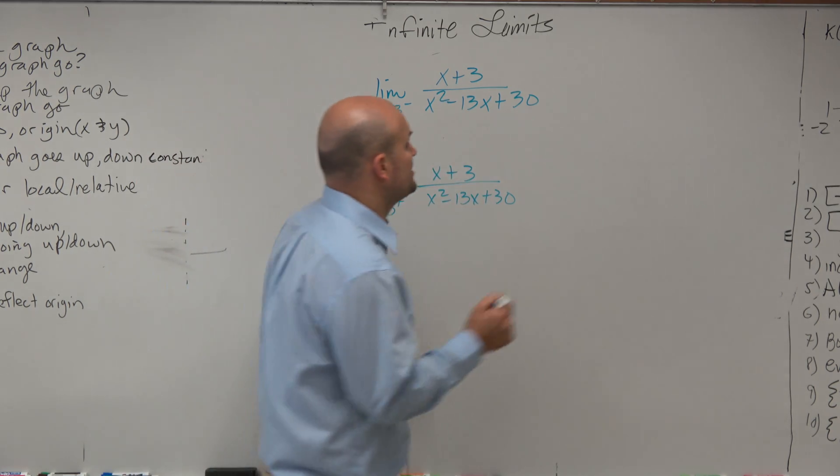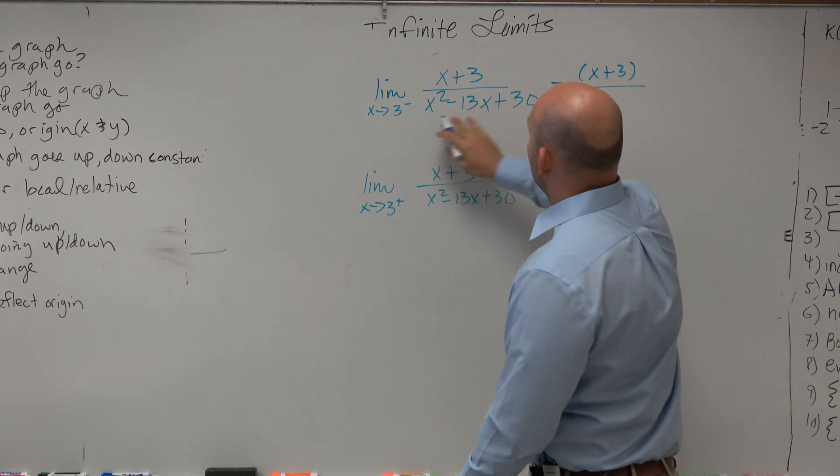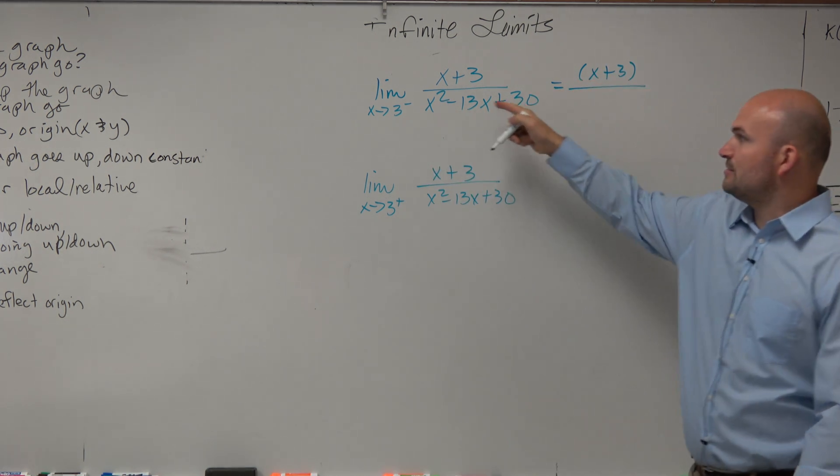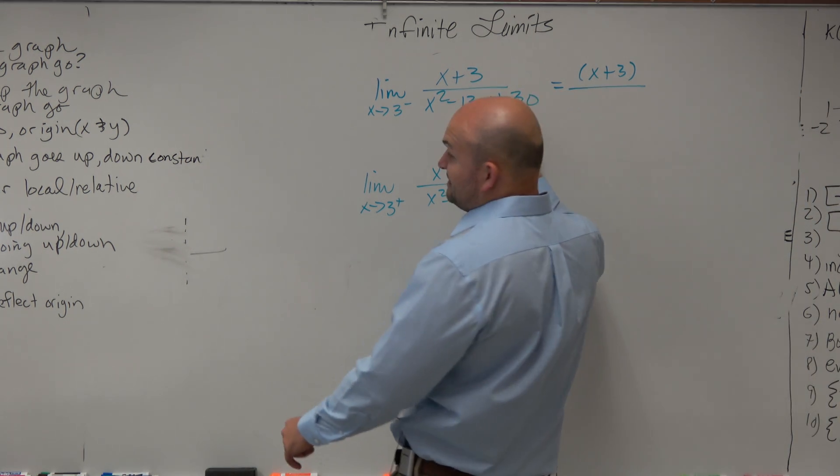So therefore, next thing we want to do is look into factoring. And if we look into factoring, we have x plus 3. Over here, we say what two numbers multiply to give me 30, add to give me negative 13. One example here is going to be they both need to be negative.